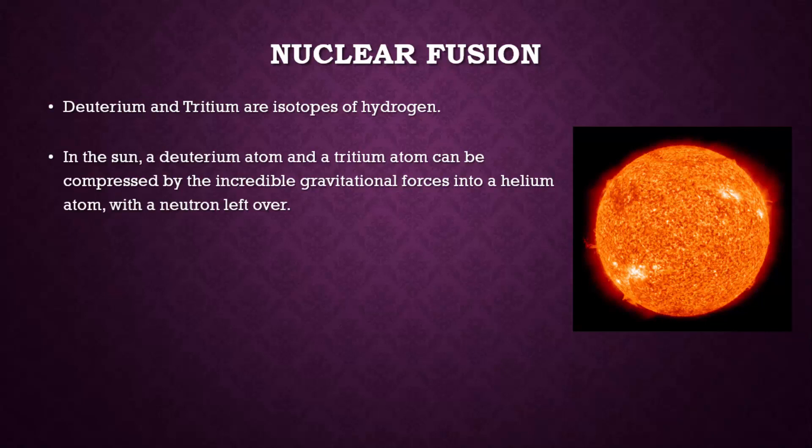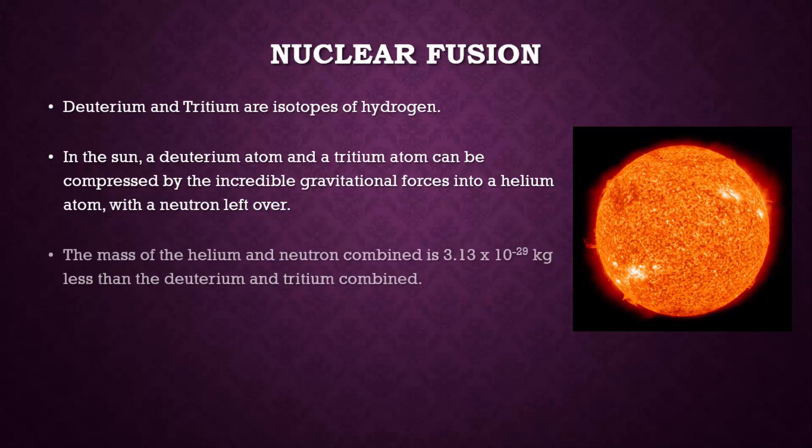In the sun, a deuterium atom and a tritium atom can be compressed by the incredible gravitational forces into a helium atom with a neutron left over. The mass of the helium and the neutron that we end up with is 3.13 times 10 to the negative 29 kilograms less than the deuterium and the tritium that we started with.